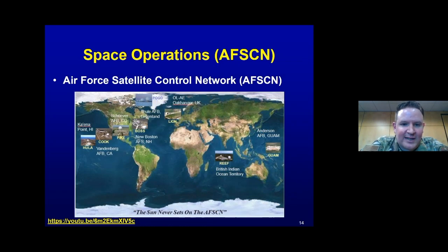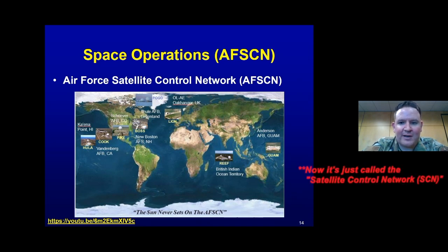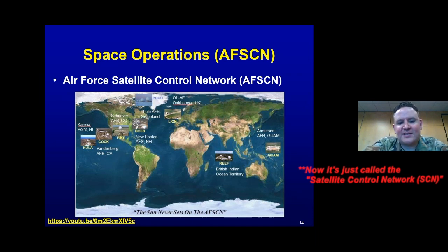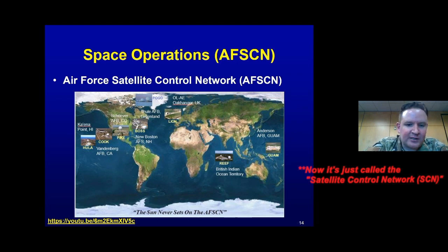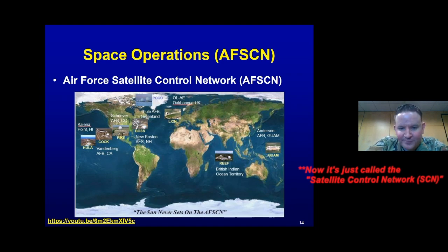The last thing I want to talk about is the Air Force Satellite Control Network — AFSCN — a network of antennas across the entire world. There are tracking stations from Thule, Greenland all the way south to Diego Garcia in the British Indian Ocean, and also Guam, Hawaii, and England. Basically, everywhere we have a distant Allied or American post, we have one of these AFSCN sites. They're SATCOM antennas that relay commands to our satellites and receive information back down from them.